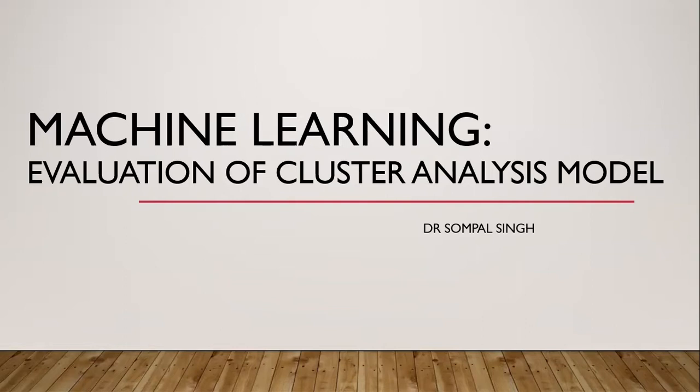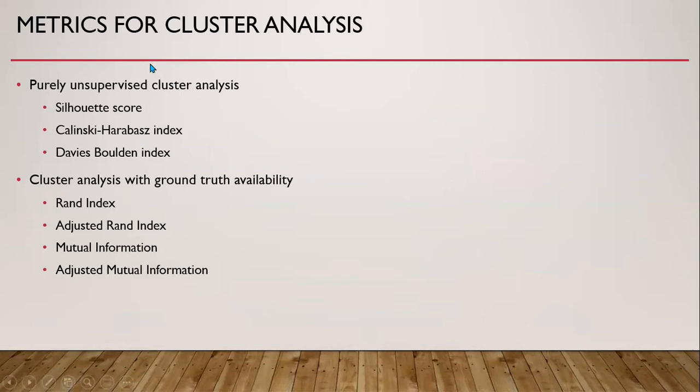These are the metrics for performance analysis of cluster analysis models. They can be divided into purely unsupervised cluster analysis metrics and cluster analysis metrics with ground truth availability. The purely unsupervised ones — where we don't have ground truth or true labels — include the Silhouette score, Calinski-Harabasz index, and Davies-Bouldin index. The second category includes the Rand index, adjusted Rand index, mutual information, and adjusted mutual information.